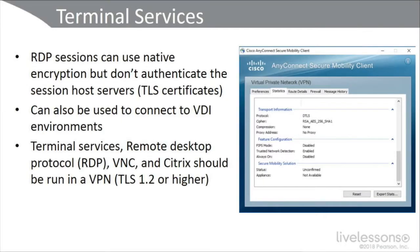We're going to talk about terminal services and similar types of services, because we're giving remote access to things like routers and firewalls and other servers over untrusted connections. It's critical that if we're using things like terminal services, RDP, and VNC, that we're in secure environments. RDP sessions can use native encryption, but they don't authenticate the session host servers' TLS certificates. You can also use these to connect to VDI environments. Terminal services, RDP, VNC, and Citrix really should be run in a VPN — either an IPsec VPN with Suite B cryptography, or if using SSL VPN, it should be TLS 1.2 or higher.